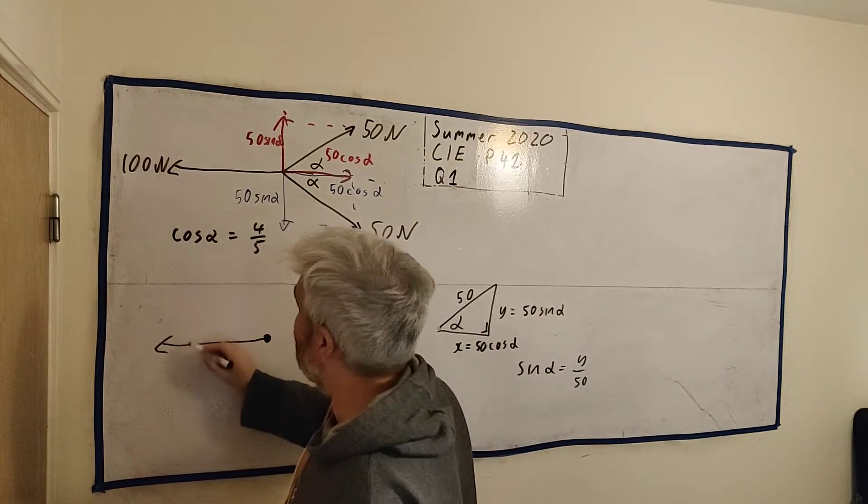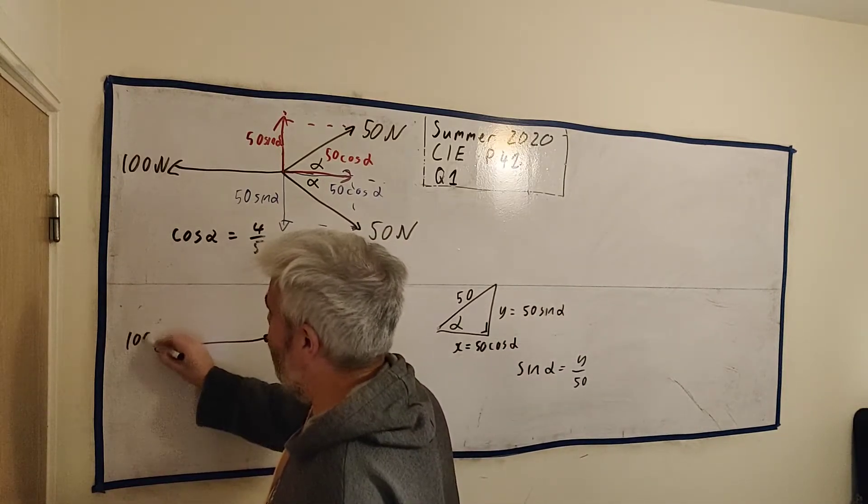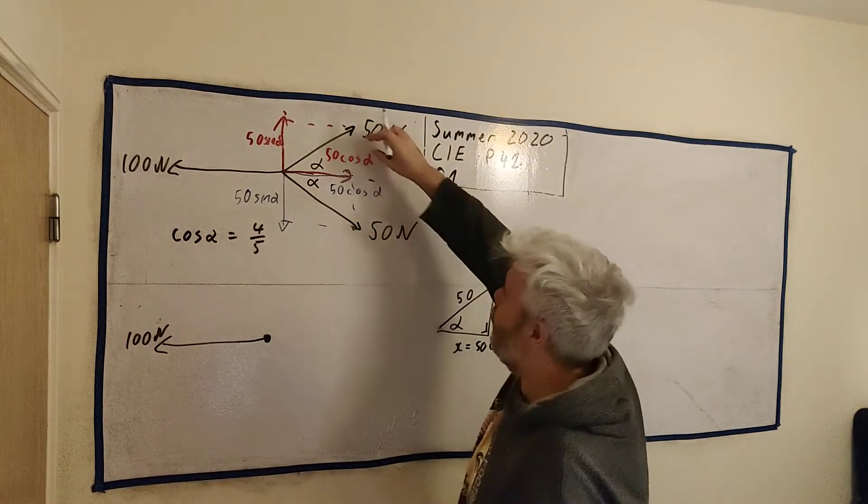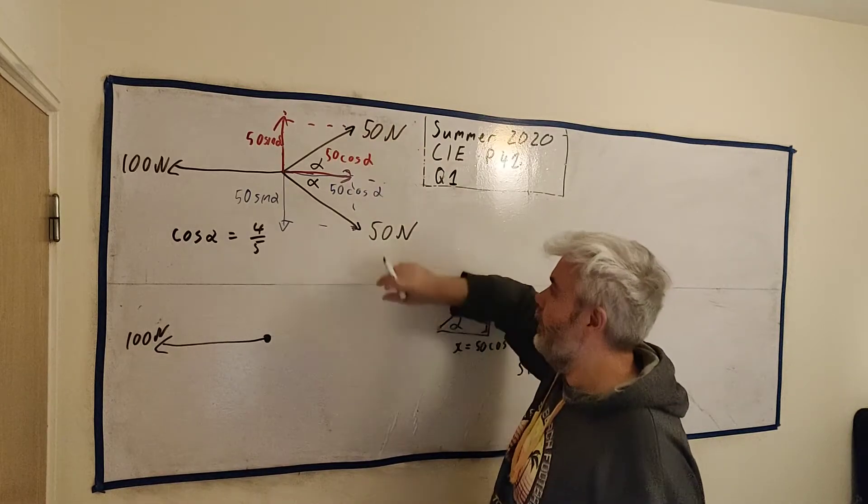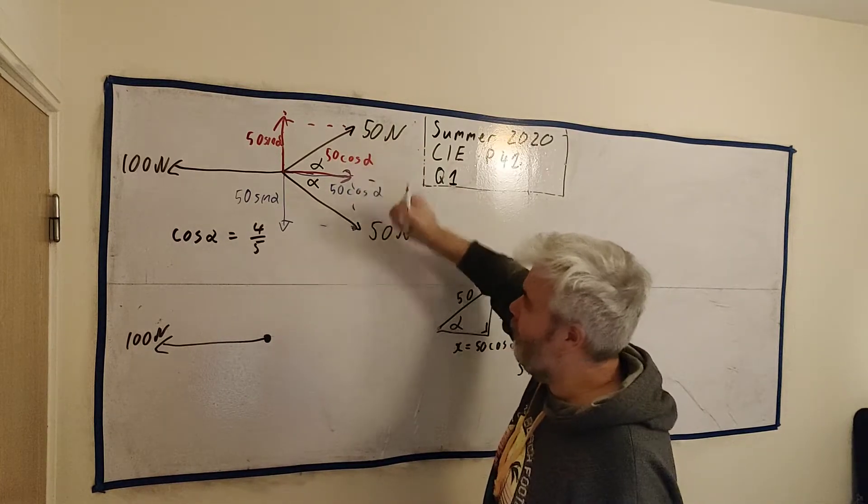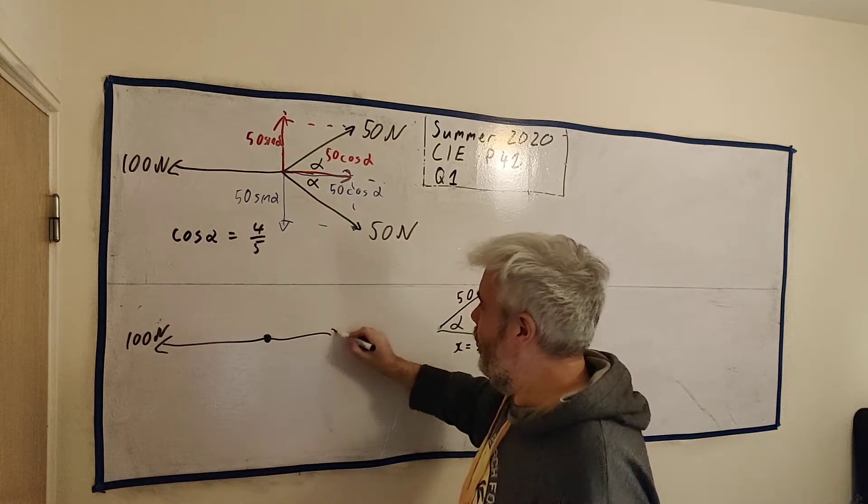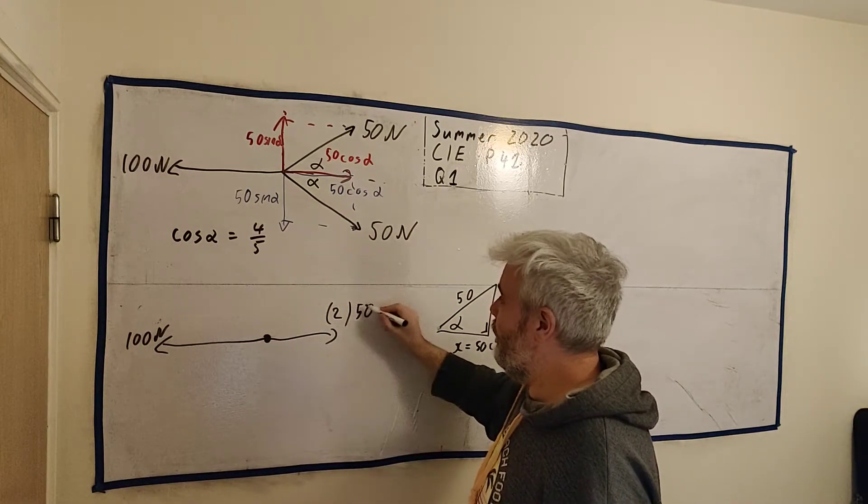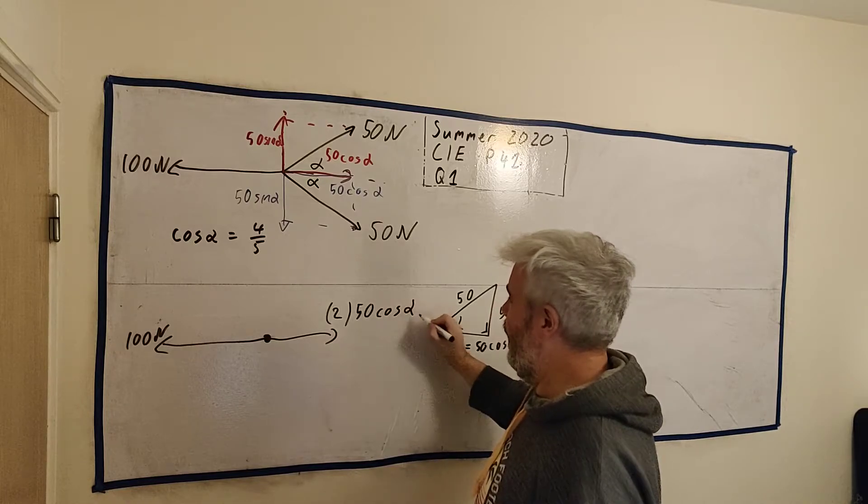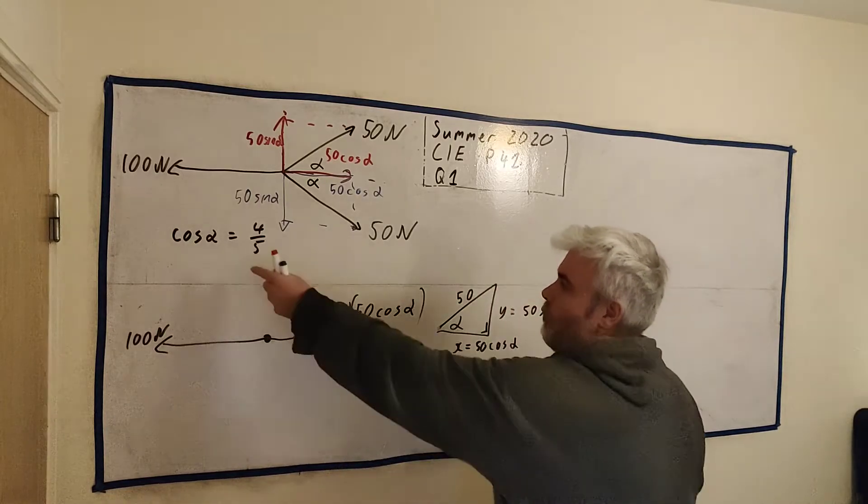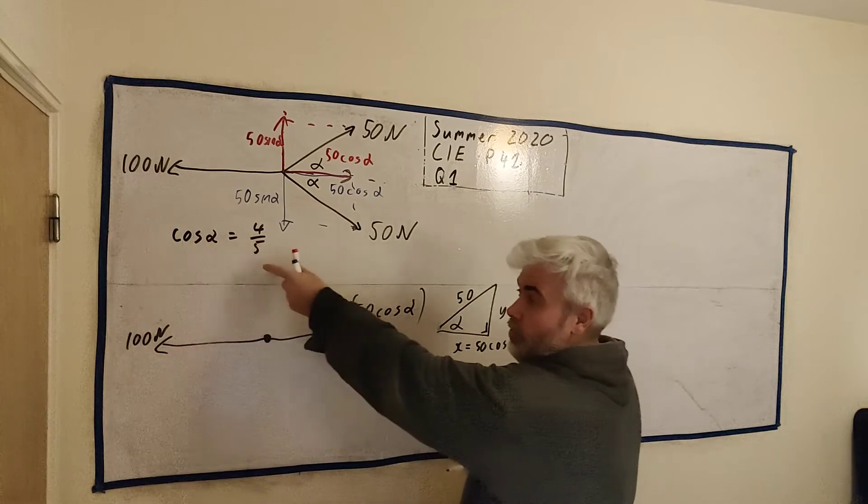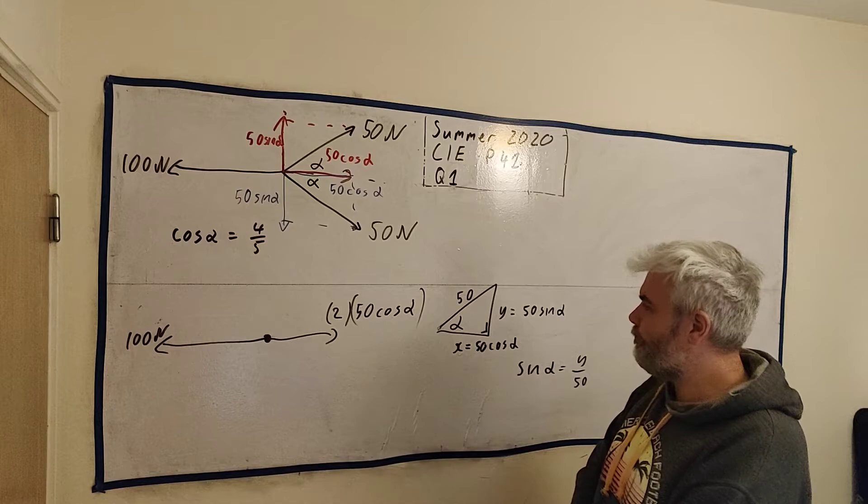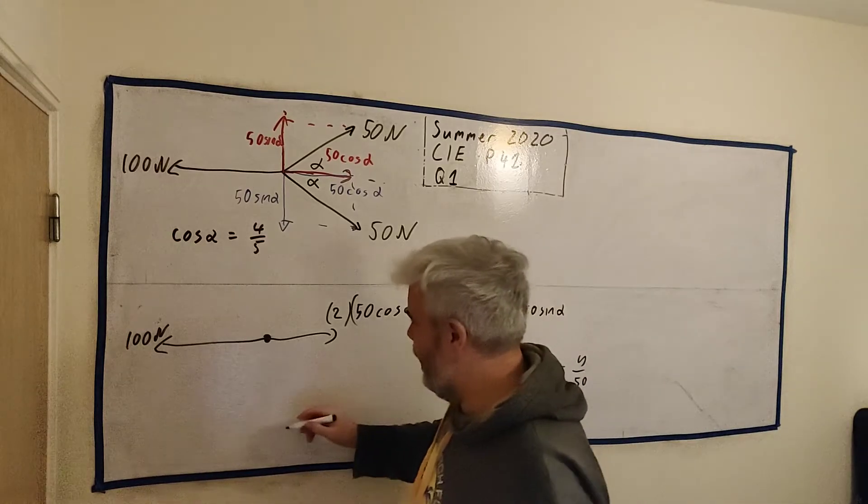So all the vectors left will be 100. And then all the vectors right. We broke this one into a 50 cosine α, and we broke this one into another 50 cosine α. What we're left with here is two of them. Two times 50 cosine α. And this is where the question was helpful to us. They told us what cosine α was equal to. They could have told us what α was equal to. It would have been the same thing. So we put both of these in.